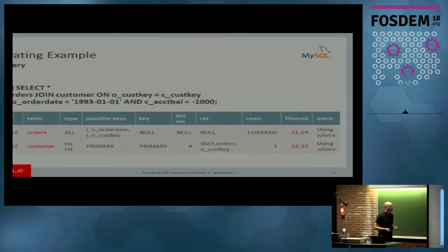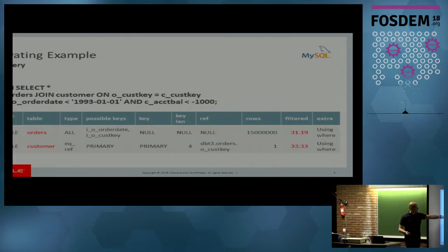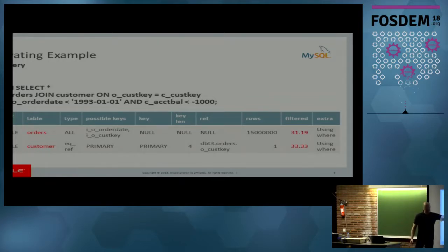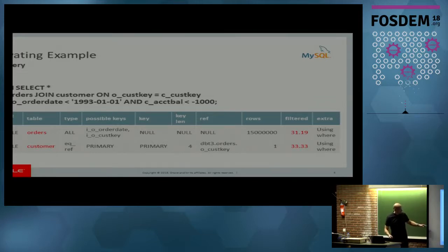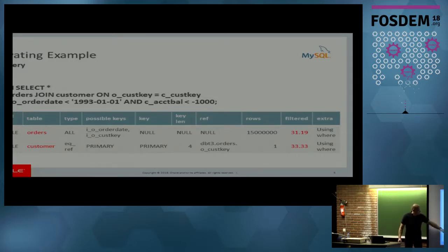For the motivating example on the need for histograms, I have this simple join query. I'm joining two tables, the orders and the customer tables, and I have some filter conditions on the date and the account balance of the customer. If I run EXPLAIN on this query, you get the query plan the optimizer has chosen. It starts with the orders table, and then for each row of the orders table, it does lookups into the customer table to find the matching row.